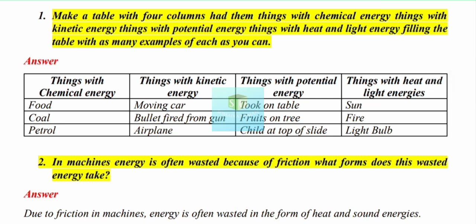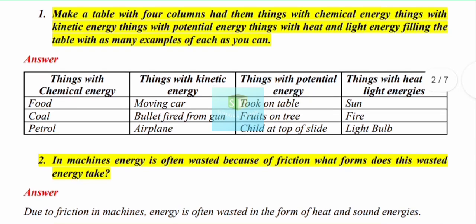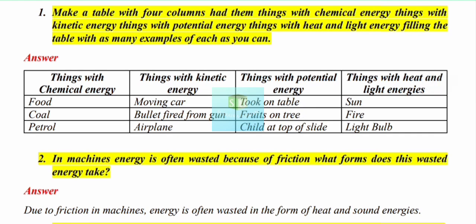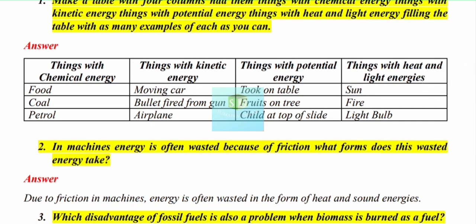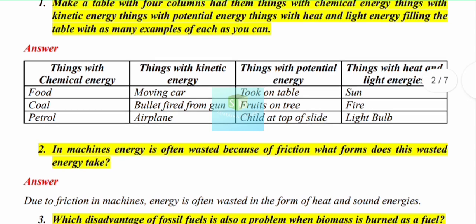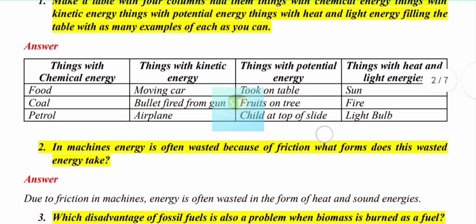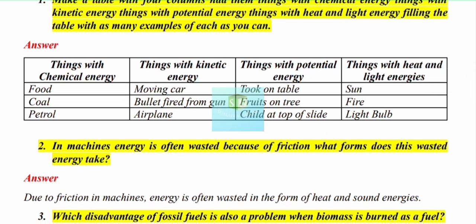When something falls from a height it also has kinetic energy, because it is moving. For potential energy, examples include a book on a table, fruits on a tree, and a child at the top of a slide — all are at height and have potential energy.